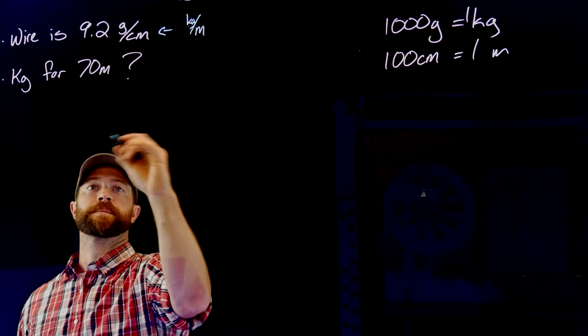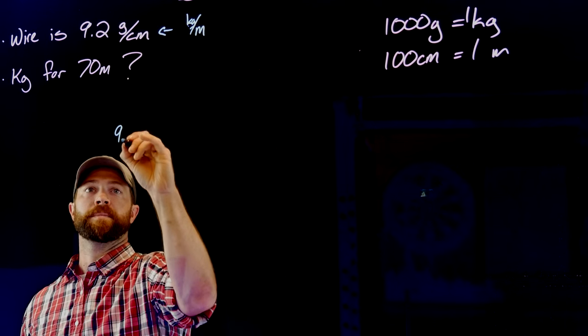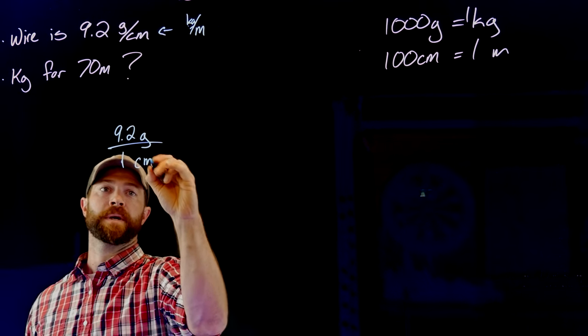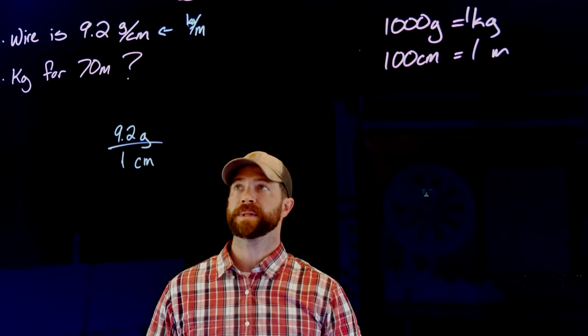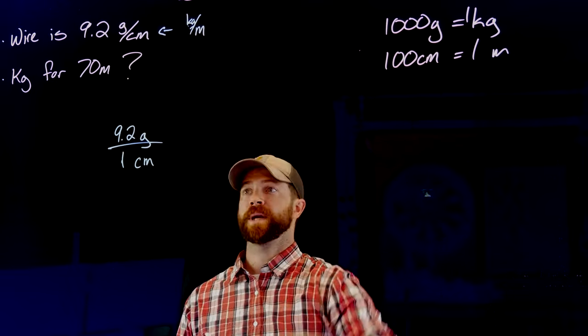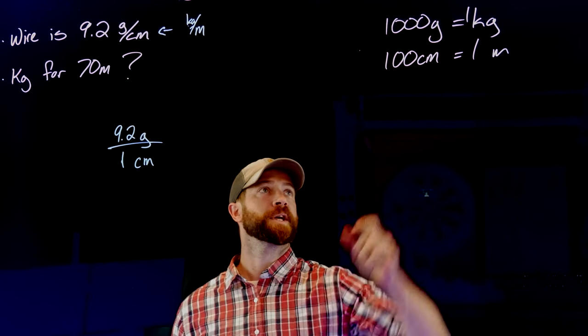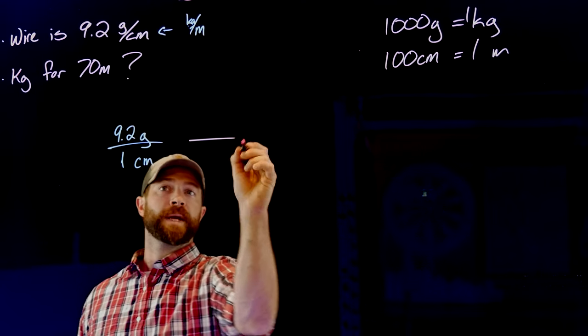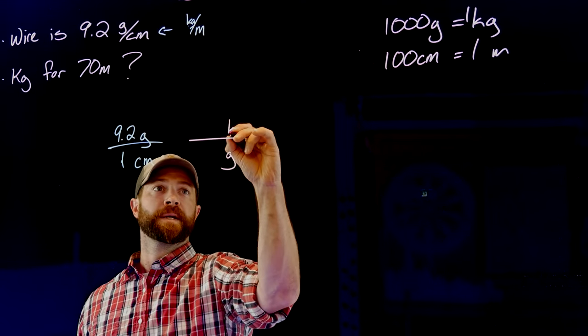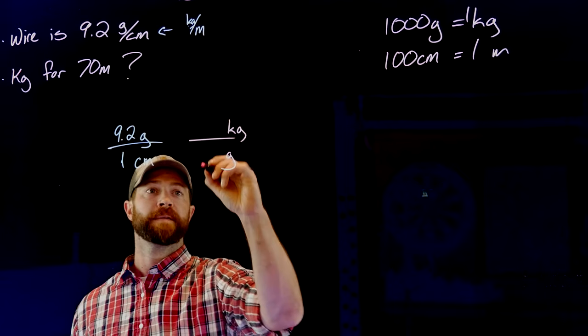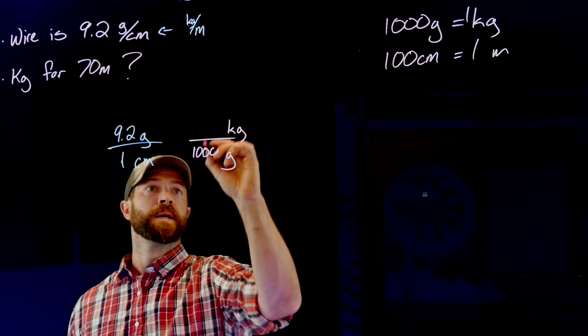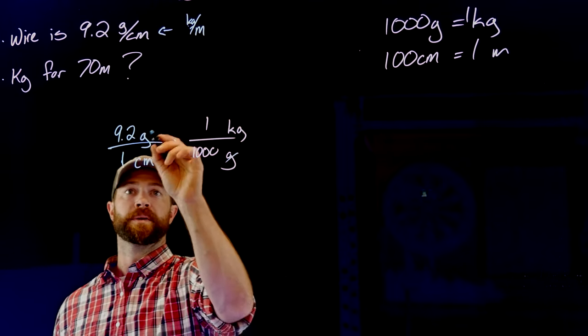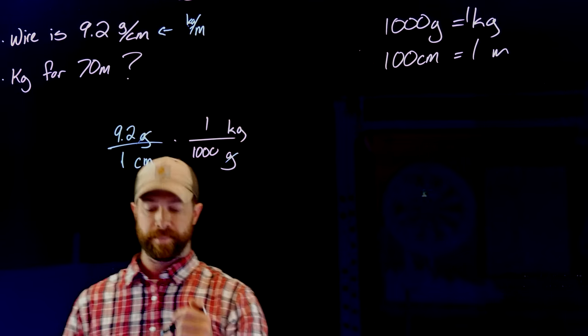This rate of 9.2 grams per centimeter I would write as 9.2 grams over 1 centimeter. And then what I'm going to do is implement these rates right here. Let's take care of the grams first. So I'm going to change from grams to kilograms. And so that rate, I'm going to put grams down here and kilograms up here. I have 1000 grams in one kilogram. And so what that does for me is cancels out the grams and turns it into kilograms information.